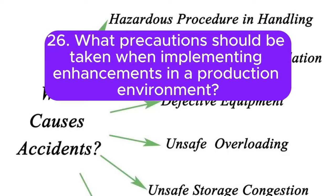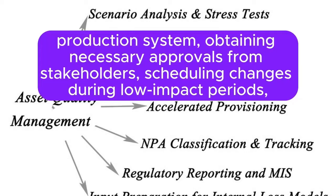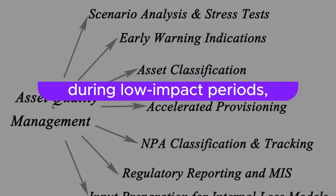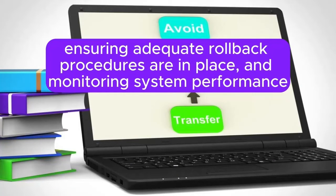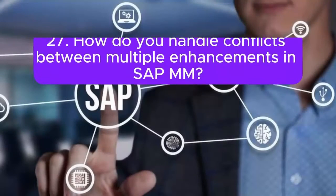What precautions should be taken when implementing enhancements in a production environment? Precautions include performing thorough testing in a non-production system, obtaining necessary approvals from stakeholders, scheduling changes during low-impact periods, ensuring adequate rollback procedures are in place, and monitoring system performance and stability post-implementation to quickly address any issues that arise.